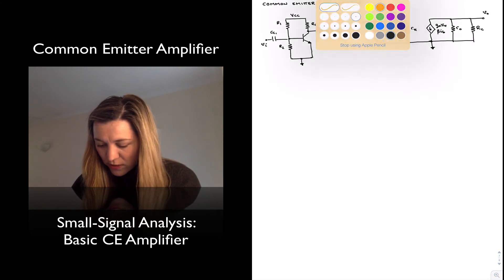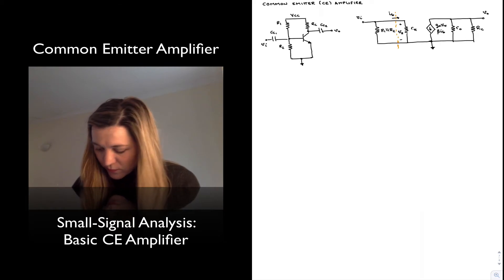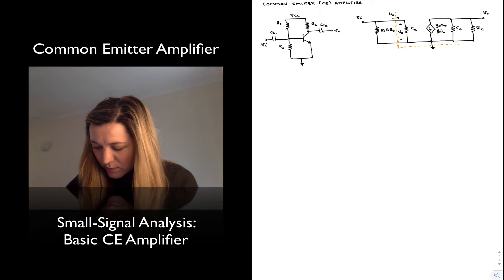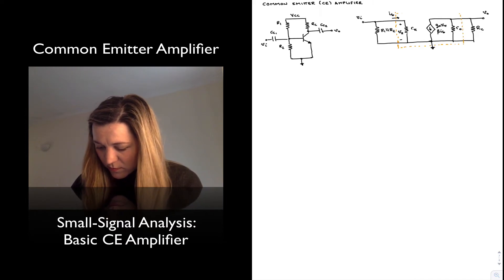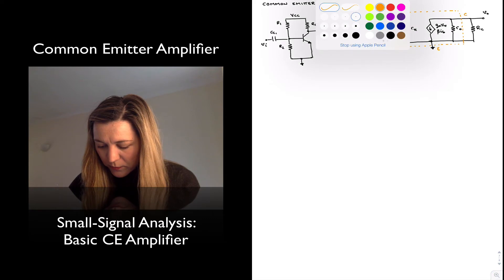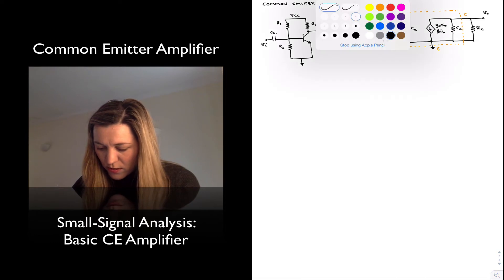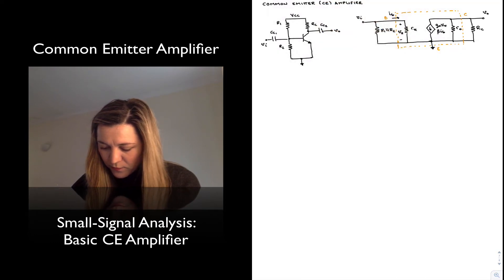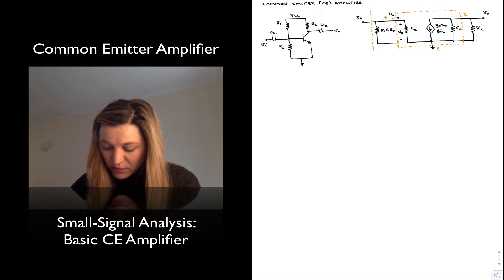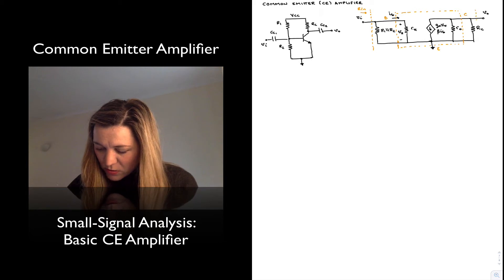Our transistor has been replaced with its small signal model. This is the transistor right here, with the base, collector, and emitter terminals. The input resistance Rin is the resistance looking into the input of the circuit, and the output resistance Rout is the resistance looking from the output terminal.